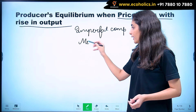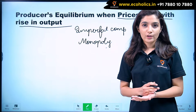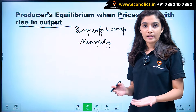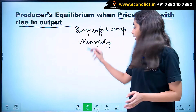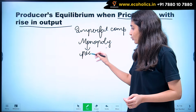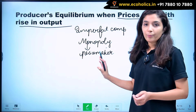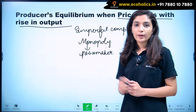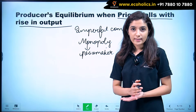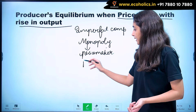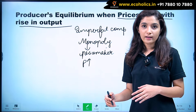Let's take the example of monopoly. In case of monopoly, we have a single seller who is producing goods which have no close substitutes, and that is why in monopoly the firm is a price maker. But in monopoly, a firm cannot fix his price and output simultaneously — if he fixes price, he cannot fix quantity, and if he fixes quantity, he cannot fix price.